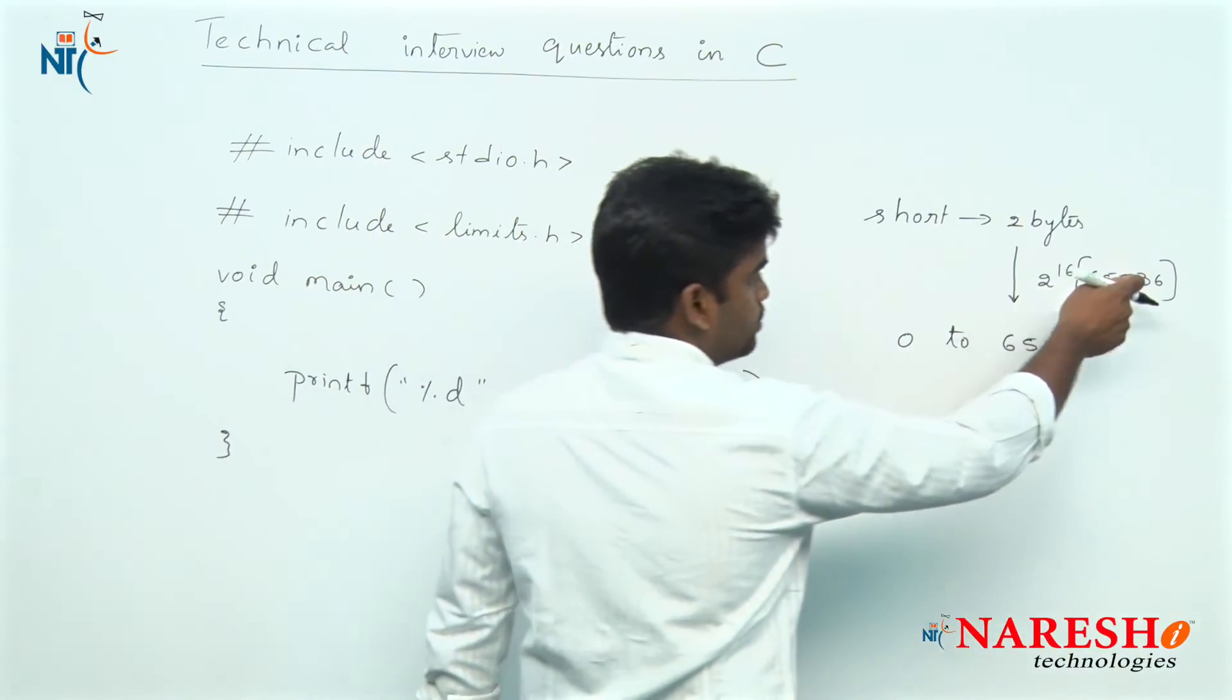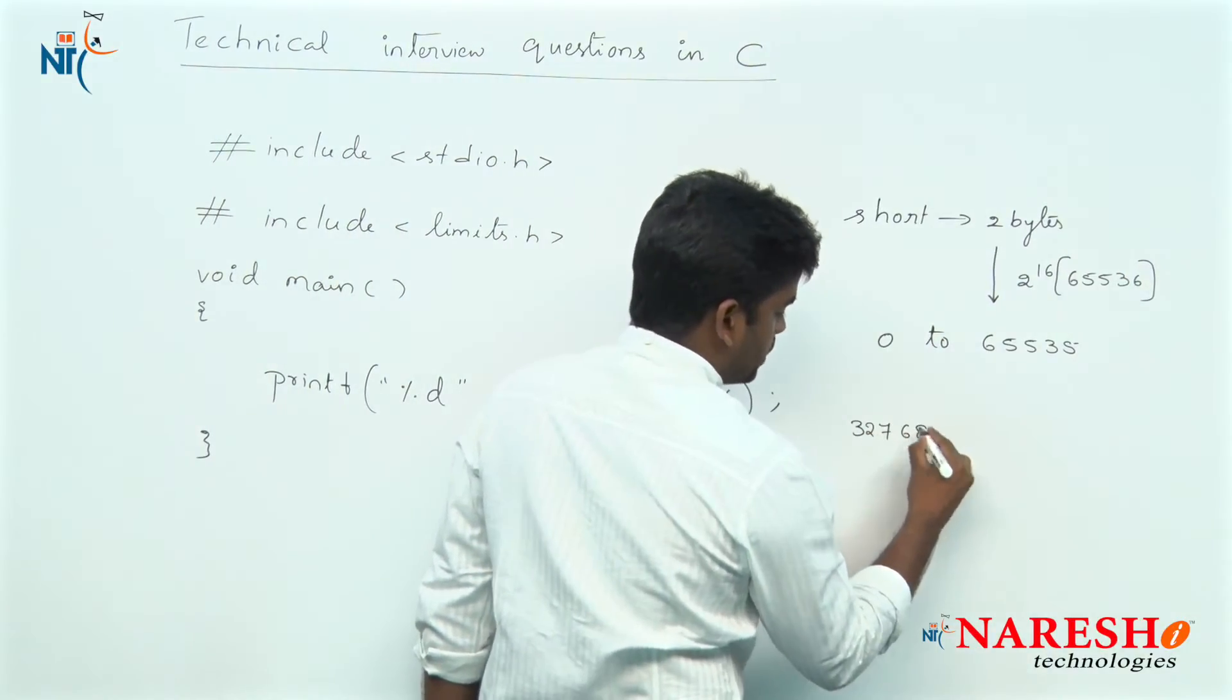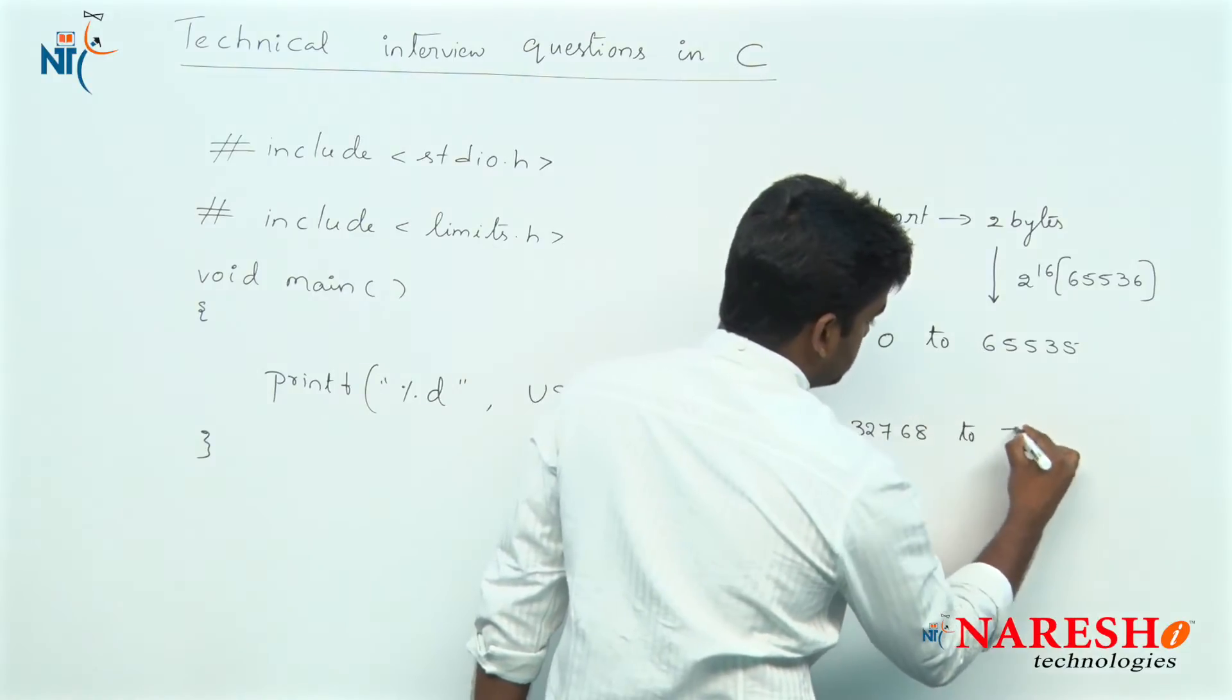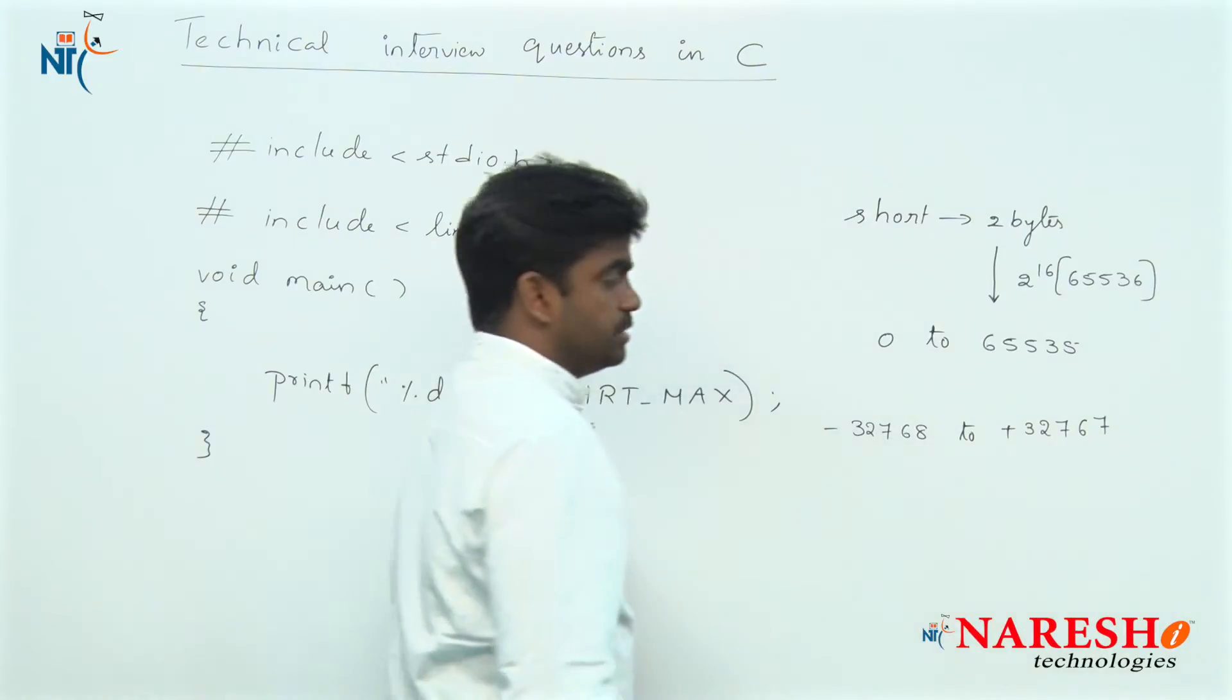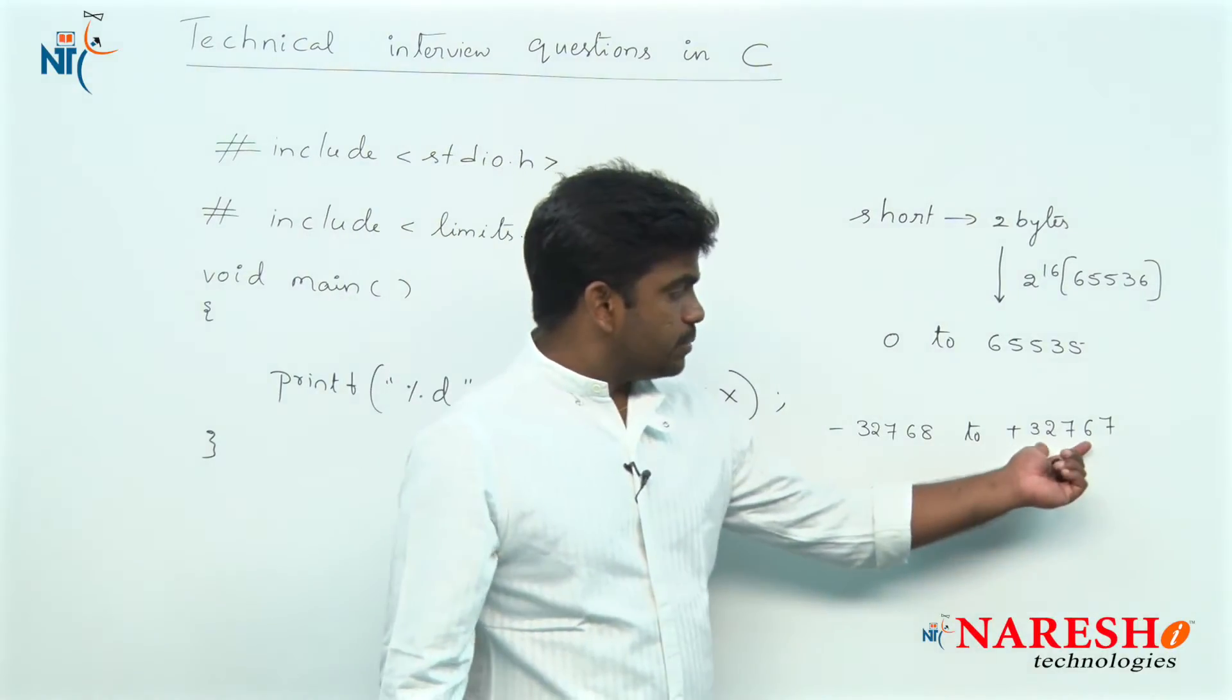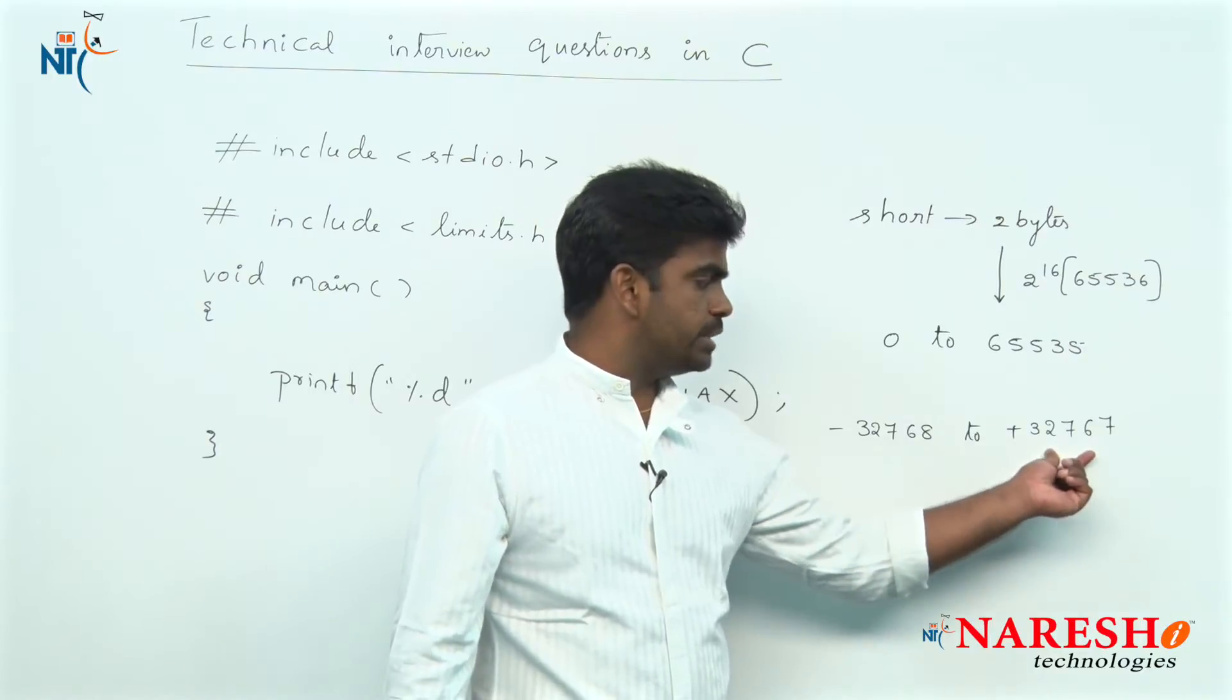What is the signed range? Just make it half. It is minus 32,768 to plus 32,767, that is the range. Why is it up to 32,767? Because the positive value starts with 0, so 0 to plus 32,767.